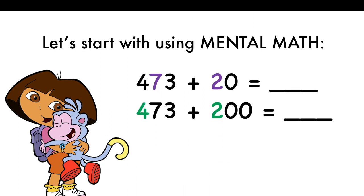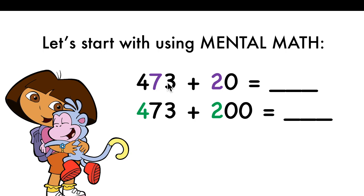You can also use mental math. 473 plus 20. Again, 20 is two tens. The tens digit is 7. You will add these two numbers together. Hundreds and ones will stay the same. So the answer will be 400... 7 plus 2 is 9, so 93 — 493.